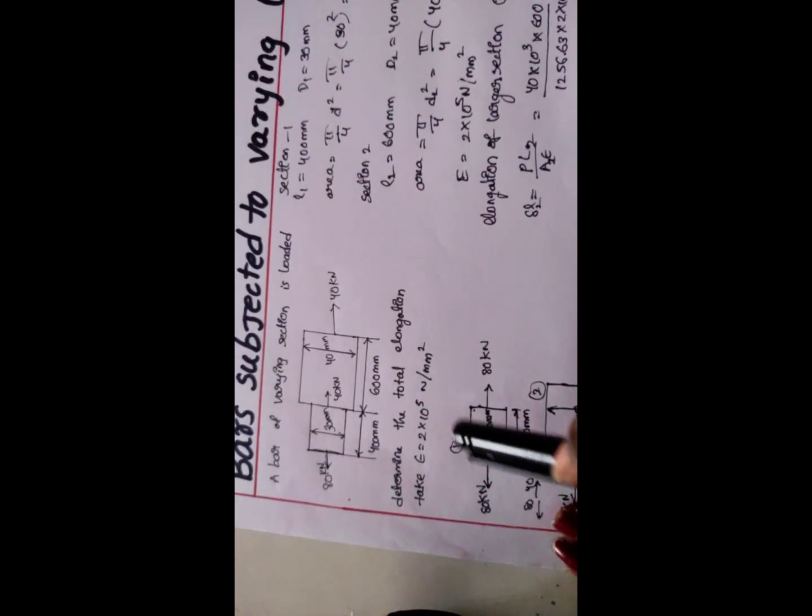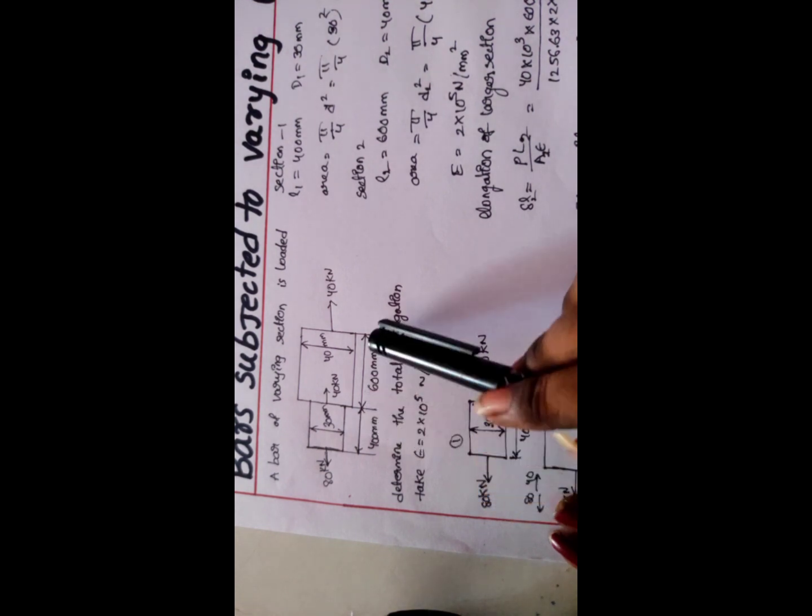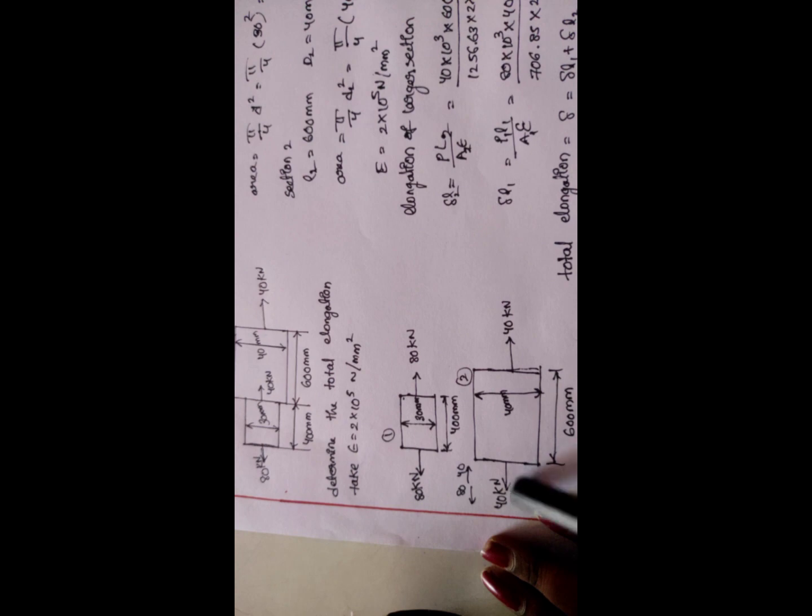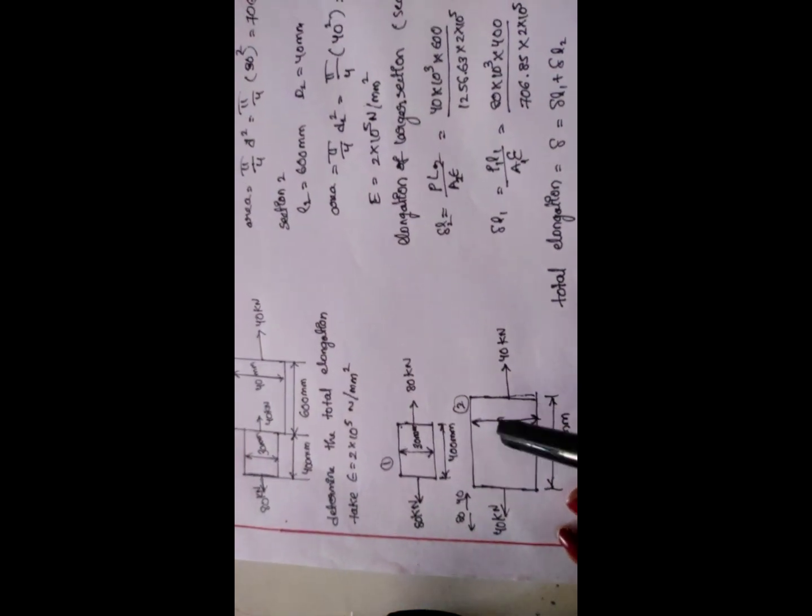Let's review the diagram. Load is in opposite direction. Section 1: 80 kN with length of 400 and diameter of 30. At section 2: 40 kN with L2 600 and D2 40. Same process for stress calculation, stress and strain calculation, load stress, and elongation at intermediate loads.